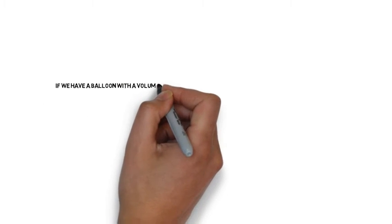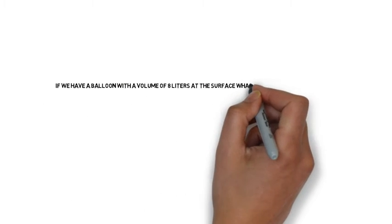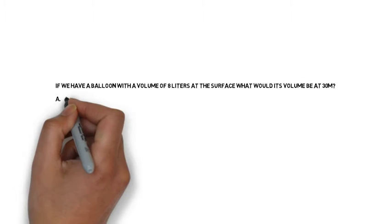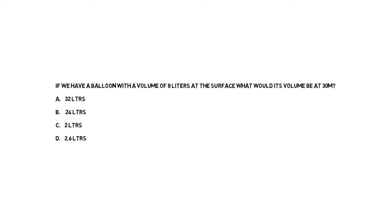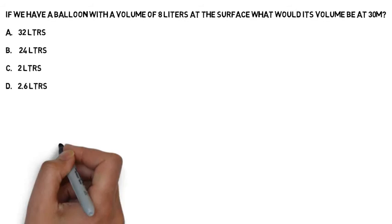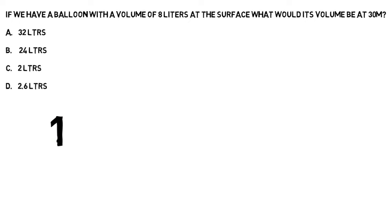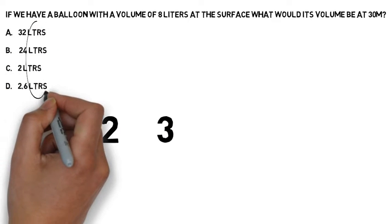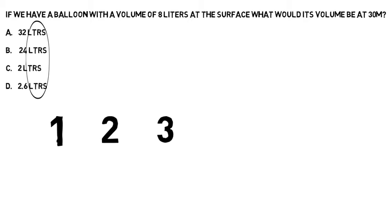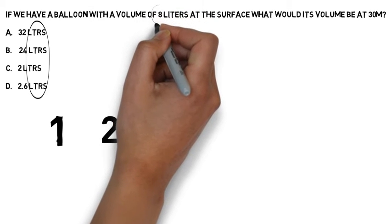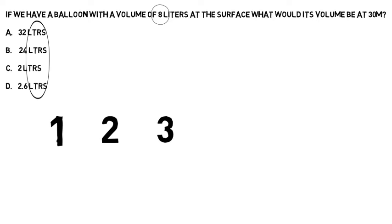Here's another pressure related question. This time it's asking about a balloon being taken from the surface to depth. Like all pressure related questions, a 1-2-3 approach is going to work. In step one we're going to focus on the units that the question is asking us about. By looking at the answers we can see we're looking at litres. Find litres in the question and take the number of litres we're given as our starting point — we can write 8 in step one.